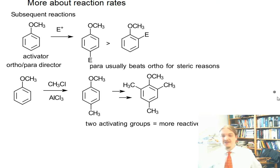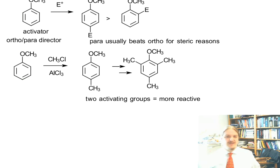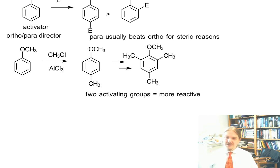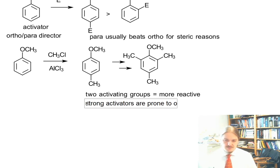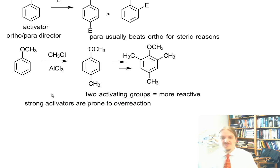Generally, when you're putting an activating group on a ring, it's going to increase the reactivity of the ring for subsequent substitution. And nowhere is this more of trouble than in the Friedel-Crafts reaction. Especially with strong activators. With moderate activators, it can be controlled. But with strong activators, it's tricky. Strong activators are prone to overreaction.